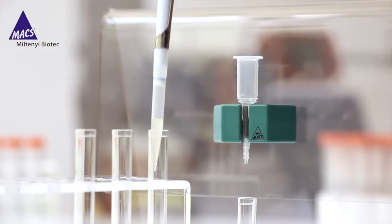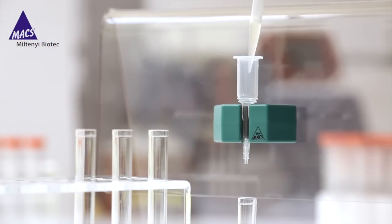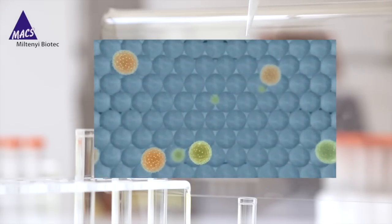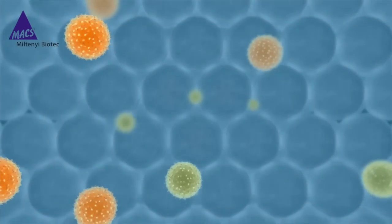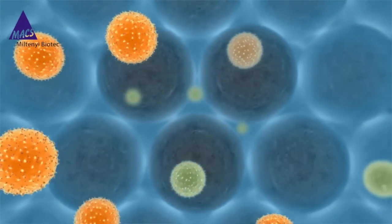Next, you apply the cell suspension to a Max Column, which is placed in the magnetic field of a Max Separator. The unlabeled cells smoothly pass through, whereas the magnetically labeled cells are retained in the column.